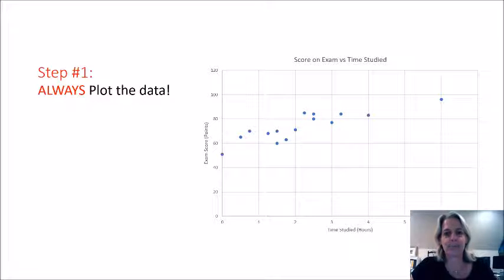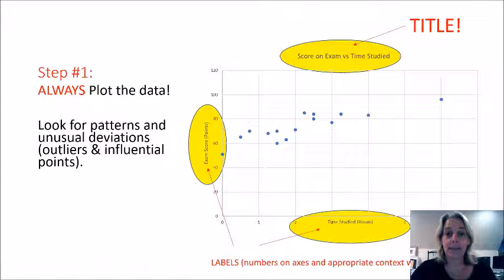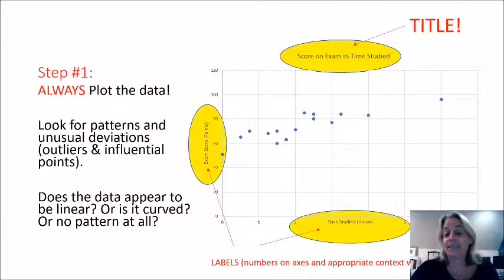So the first thing we want to do, always step one, always plot your data. So you can enter your data in your list one and your list two in your graphing calculator and create a graph. Just remember that you always need to show your titles and your labels and then plot your axes accordingly. So you're going to look for any kind of patterns and deviations and outliers, influential points in your data set. And look and see, does your data set appear to be linear? Does it possibly follow a curved pattern? Does it not have any pattern at all? So you're really only wanting to come up with a least square regression equation, or what we call a model, if the data is linear. And the only way we're going to know that is to actually plot our data.